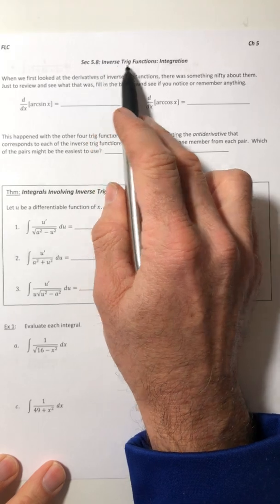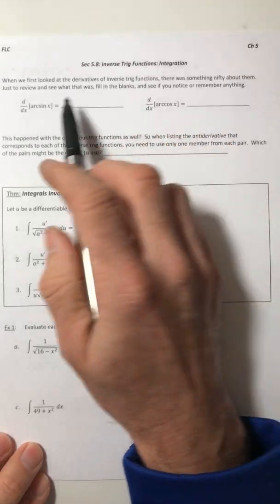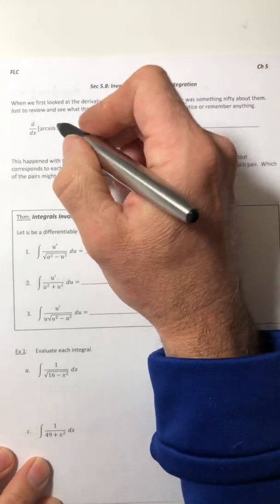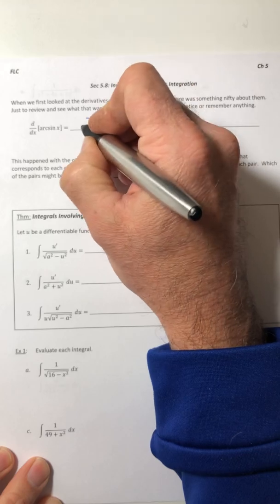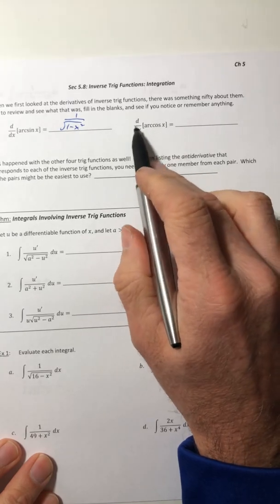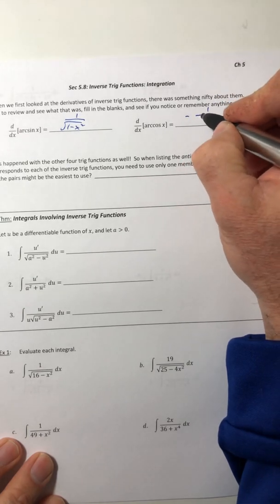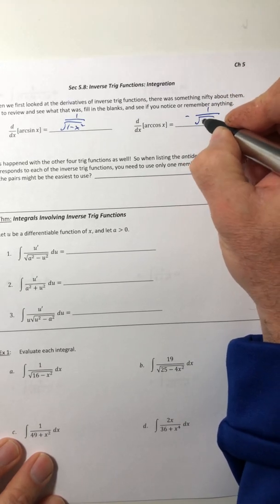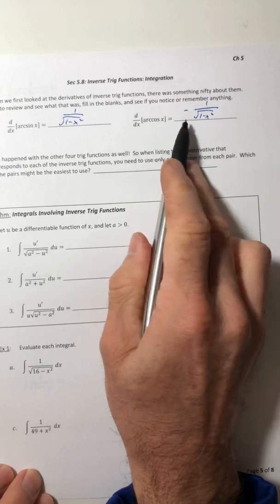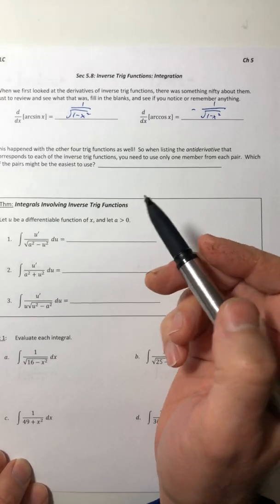So we have one more type of function to look at and that's the inverse trig functions. We saved the best for last. So let's look at the derivatives of arcsine and arccosine. The derivative of arcsine was 1 over root 1 minus x squared. And the derivative of arccosine just had a negative sitting in front of it. So arcsine was positive, arccosine was negative.